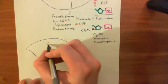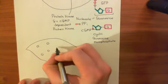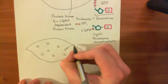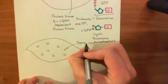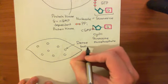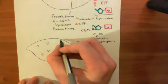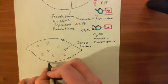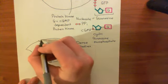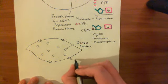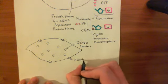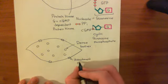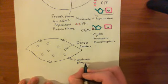Instead, what you have in the cytoplasm of the smooth muscle cell are lots of structures known as dense bodies. In addition to the dense bodies in the cytoplasm, you also have proteins in the membrane of the smooth muscle cell known as attachment plaques.